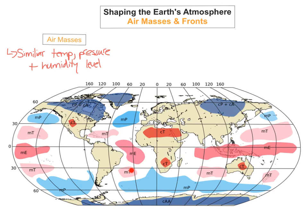Air masses that originate over land will be known as C, for continental. Air masses that originate over oceans will be known as M at the front, standing for maritime. If they travel over polar regions you add a P, if they travel over tropical regions you give them a T, and if they travel over Arctic regions you give them an A.